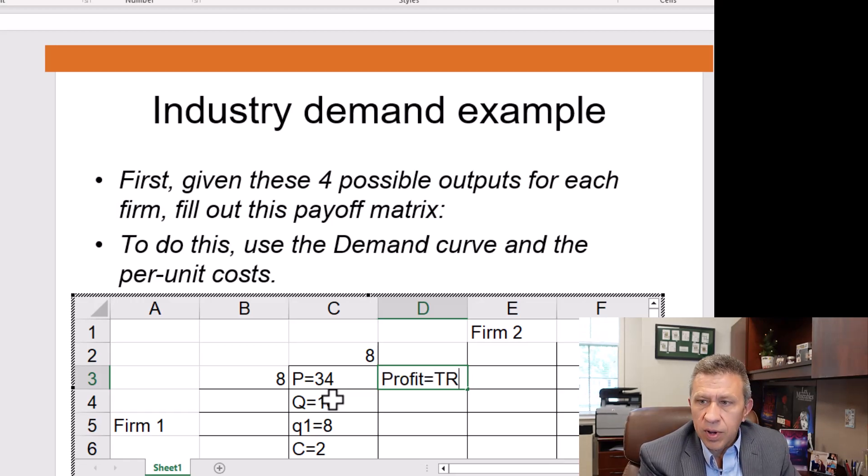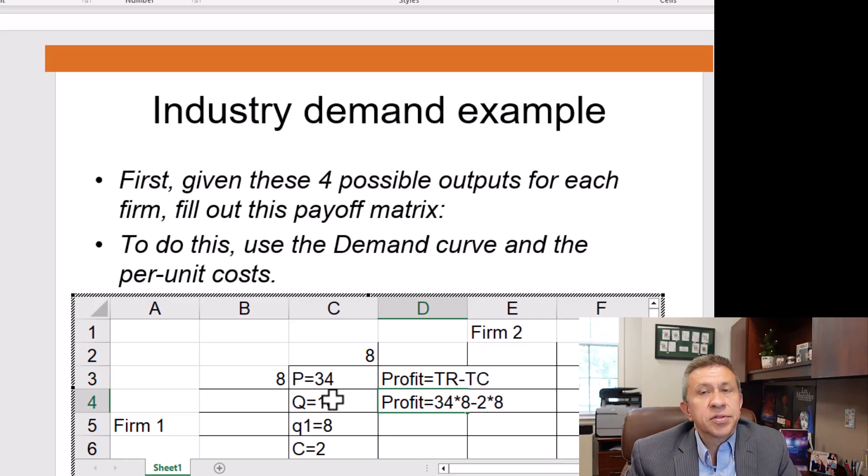Profit here. Well, profit is total revenue minus total cost. That's our simple profit formula. What's the total revenue? The total revenue is price times the quantity the firm sells. We know the price is going to be 34. We know that each firm is selling eight. So the profit's 34 times eight minus the total cost. Well, there's a per unit cost of two dollars times eight units. So it's 34 times eight minus two times eight, or 32 times eight.